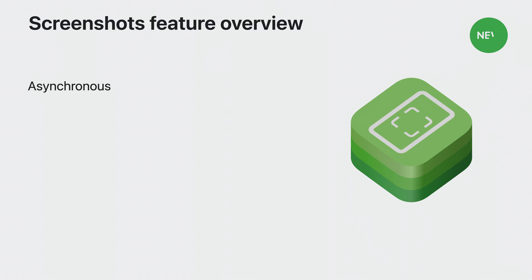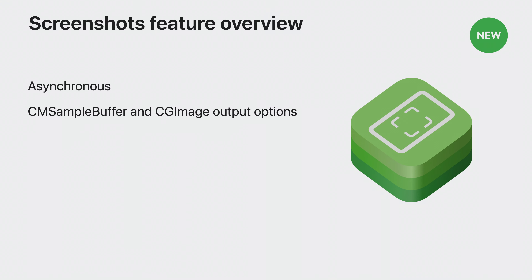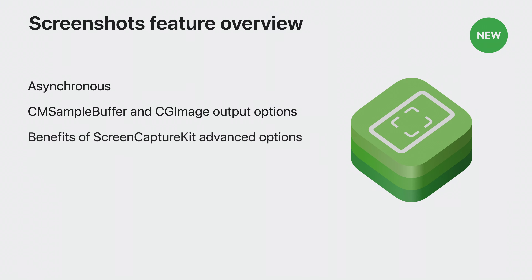The new API is asynchronous. For your output image, you can choose between a CMSampleBuffer or a CGImage format. The CMSampleBuffer option has additional pixel formats available, which is great if you're interested in specific formats. If you already use CGImage in your code, then using this format will be easier to integrate. In either format, your screenshot will use almost all of the same configuration options as Screen Capture Kit streaming and will follow a similar setup flow.